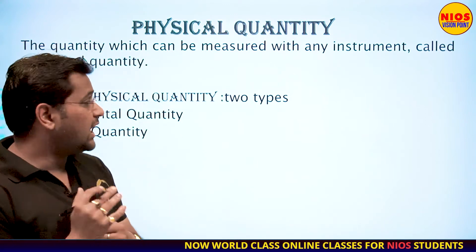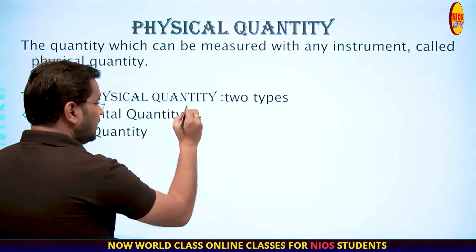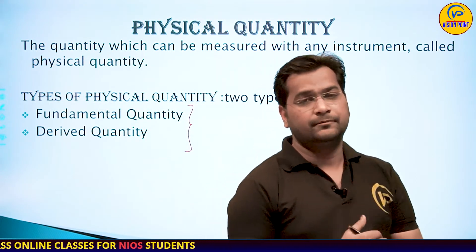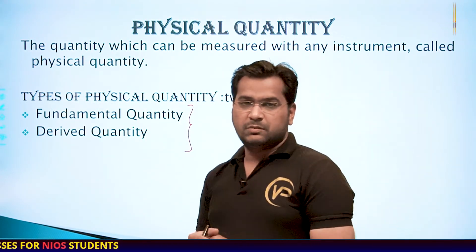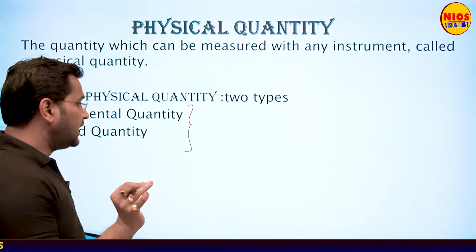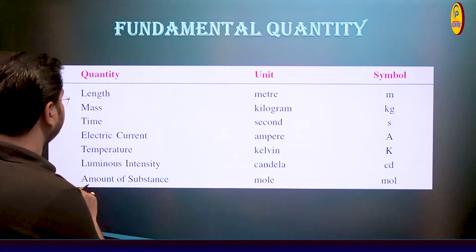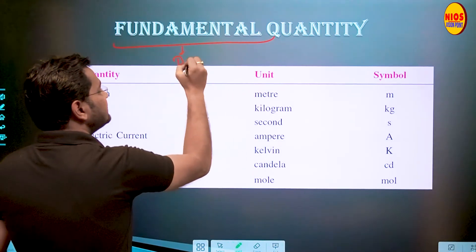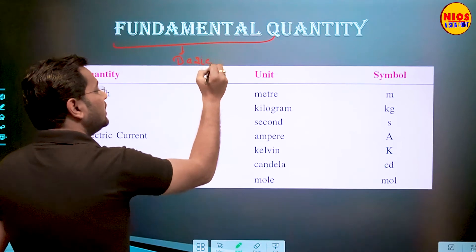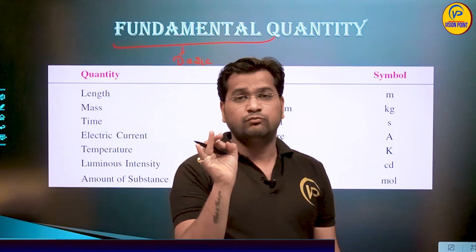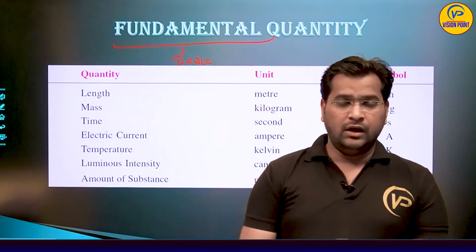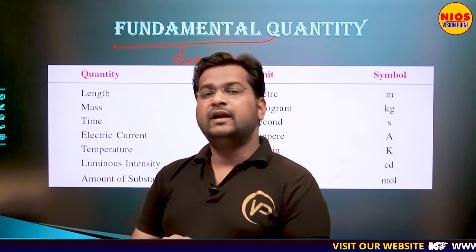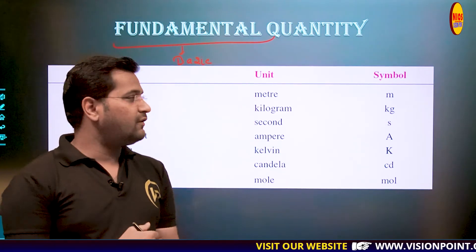अब physical quantity दो type की होती है — fundamental quantity और derived quantity। Fundamental का मतलब होता है very basic quantity जो naturally exist करती, जिनका कहीं से कोई derivation मुमकिन न हो, जिनको हम derive नहीं कर सकते। Those quantities are known as fundamental quantities. We have seven fundamental quantities.